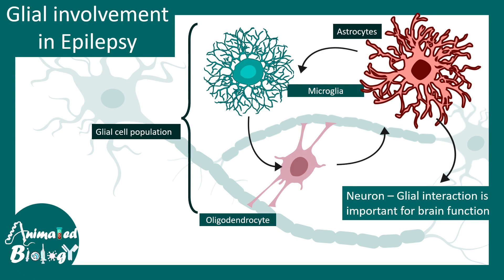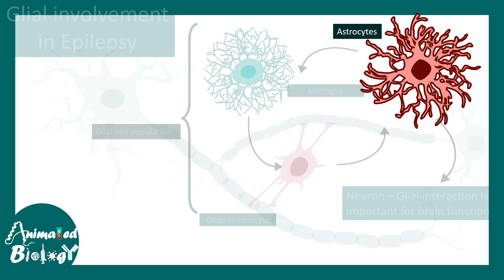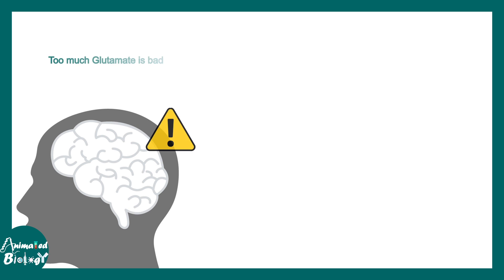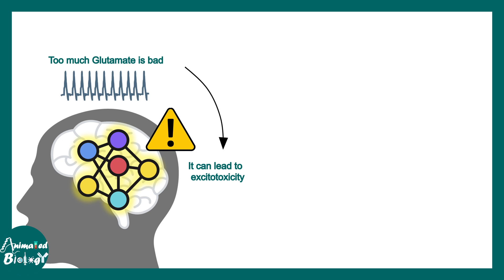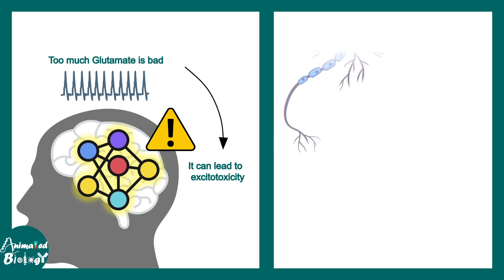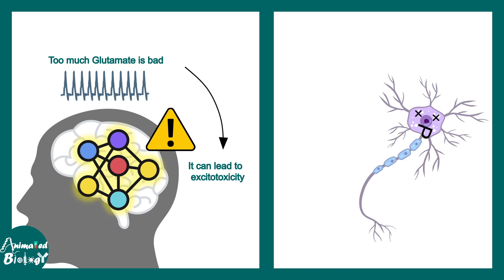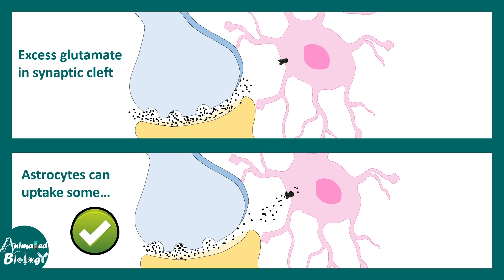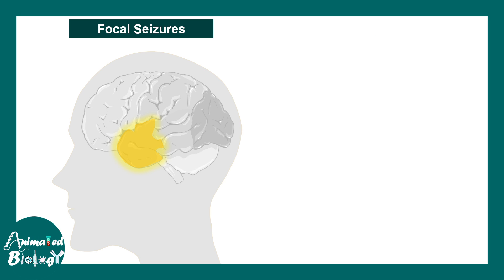So far we have taken a neurocentric view of epilepsy, but there is glial involvement as well. Astrocytes, one type of glial cell, form the tripartite synapse and can form synapses with neurons. When there is too much glutamate — which is bad for neurons and leads to excitotoxicity and neuronal death — astrocytes come to the rescue by taking up excess glutamate from the synaptic cleft, thereby preventing excitotoxicity.